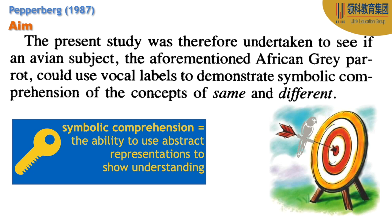Let's get into the aim and procedure. We could actually go to the primary source itself to read the aim: 'The present study was therefore undertaken to see if an avian subject — the aforementioned African gray parrot — could use vocal labels to demonstrate symbolic comprehension of the concepts of same and different.' That's a bit long for an aim, so we could just clean that up. 'Avian subject' meaning bird species.